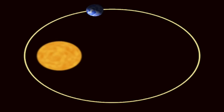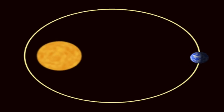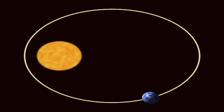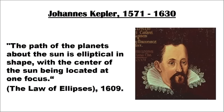The first Milankovitch cycle is known as eccentricity. A simple model of the Earth's orbit is that we swing around the Sun in a regular manner, but in fact the orbit varies and fluctuates in complex cycles. In 1609, Johannes Kepler set out three laws. The first law stated that the orbit of the Earth is an ellipse and not a circle, as was previously believed.